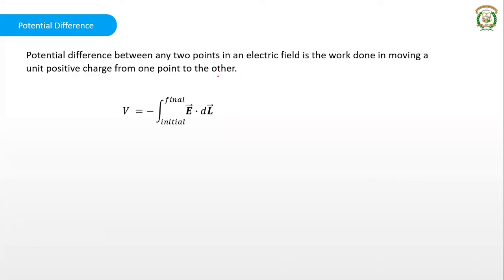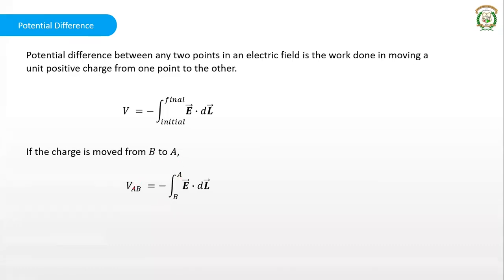You can express the potential difference as minus the integral of E·dl from the initial to final point. If you are moving from point B to point A, this is written as V_AB, which indicates the potential at point A with reference to point B.